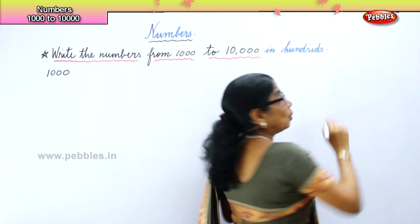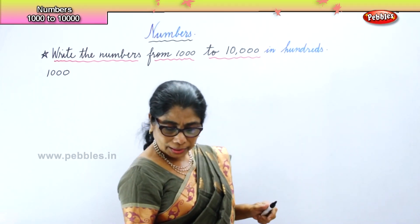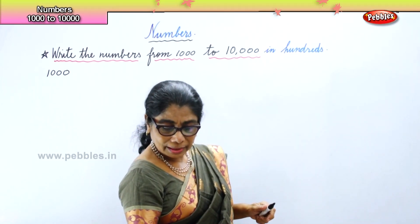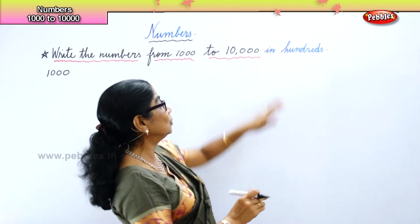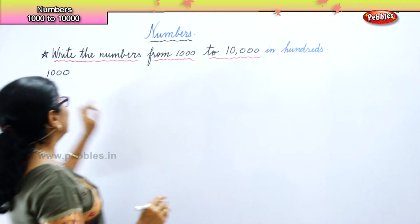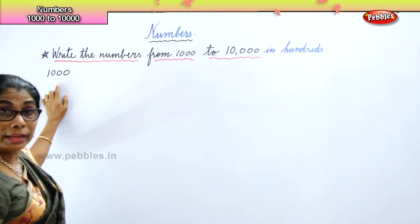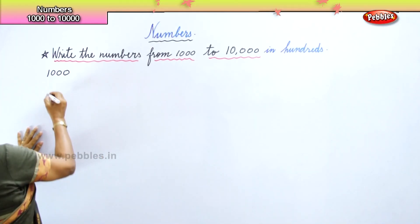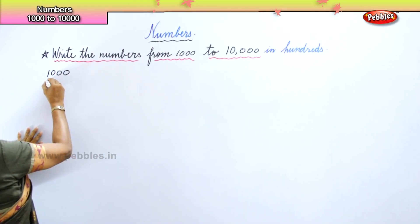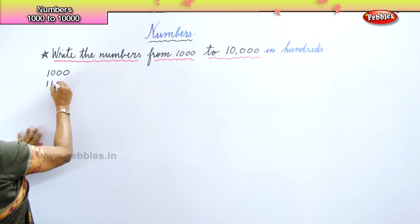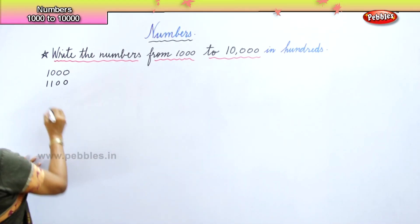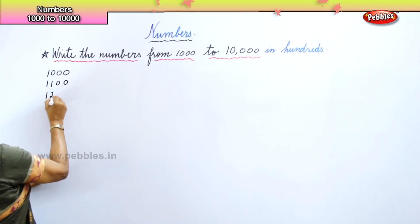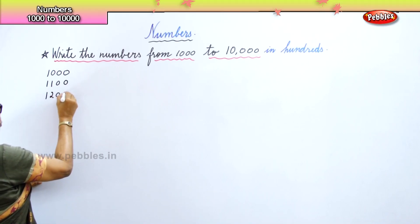That means one thousand one hundred, one thousand two hundred — that is what it is in hundreds. So we have here one thousand, and next we write one thousand one hundred.